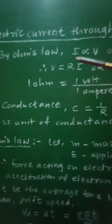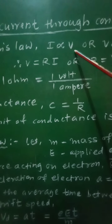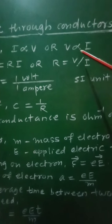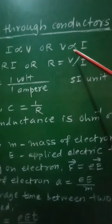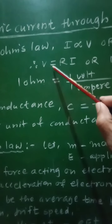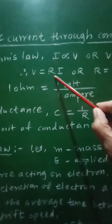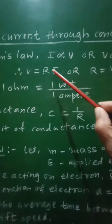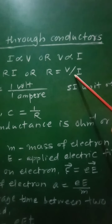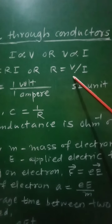By Ohm's Law, current I is directly proportional to potential difference V. The reverse statement is also correct, so generally the mathematical statement for Ohm's Law is given as: potential difference V is directly proportional to current I. From this we write V = R × I, where R is the proportionality constant called the resistance of that conductor. From this relation, R = V / I, which gives the expression for resistance.